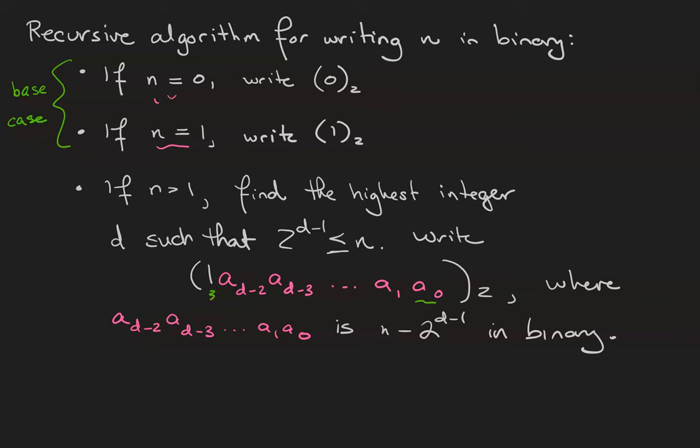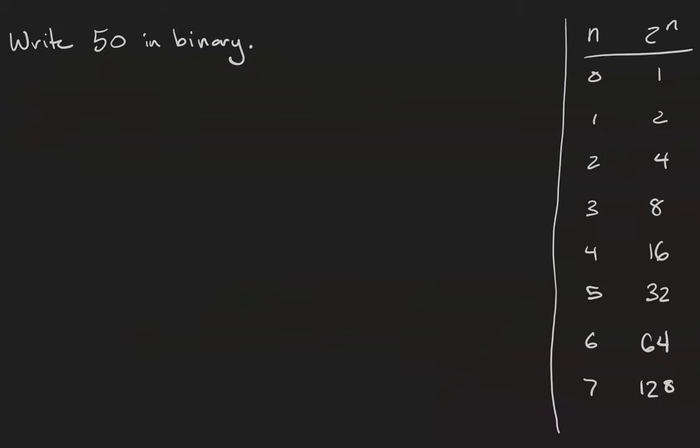Then we're going to put a 1 as the highest digit of our number, and then we're going to fill out the rest of the digits according to whatever the binary expansion of n minus 2 to the d minus 1 is. So in order to find the binary expansion of n, we end up finding the binary expansion of the smaller value instead. And I want to point out to you, here is where the recursion comes in. In order to write a number in binary, we must write another number in binary.